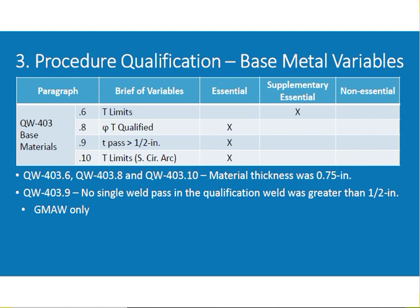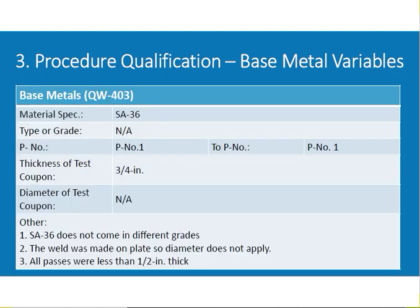QW-403 base metal: material specification SA36, P-number 1, group number 1. Thickness of test coupon is three-quarter inch. SA36 does not come in different grades. The weld was made on a plate, so diameter does not apply. All passes are less than half inch thickness.